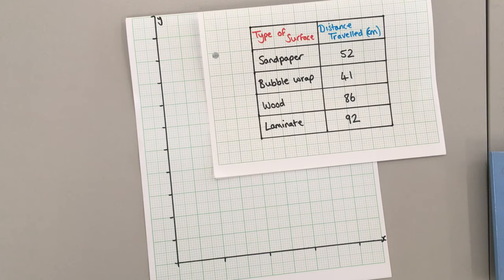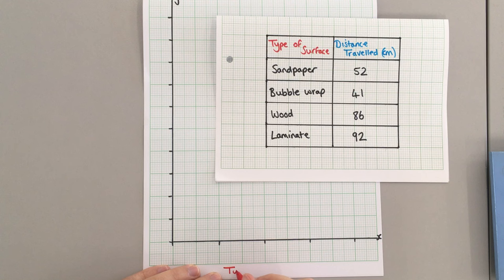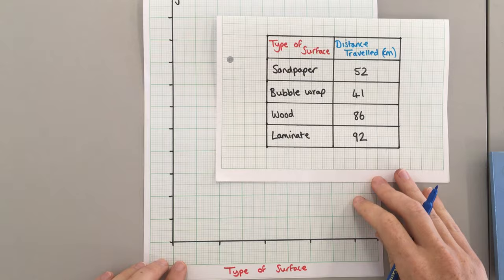So my independent variable, which is found in the left-hand column, goes along the x-axis. So I'll label my x-axis with my independent variable, the variable I change: the type of surface. There's no units for this.